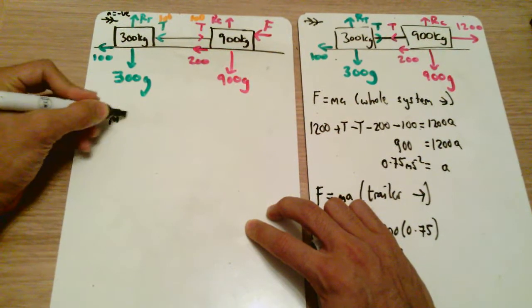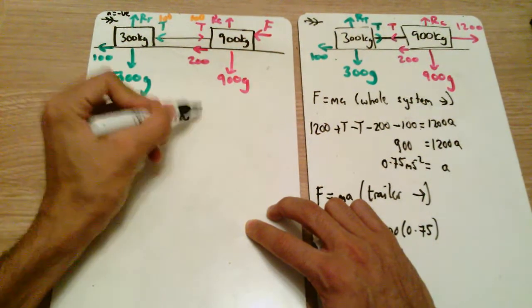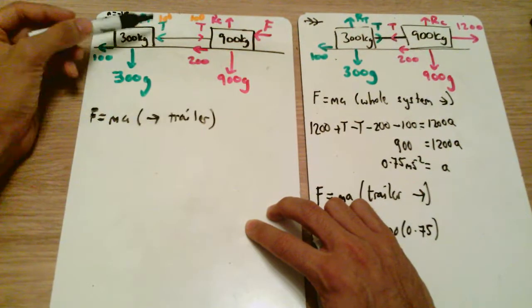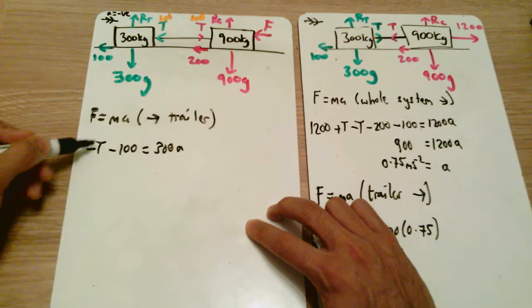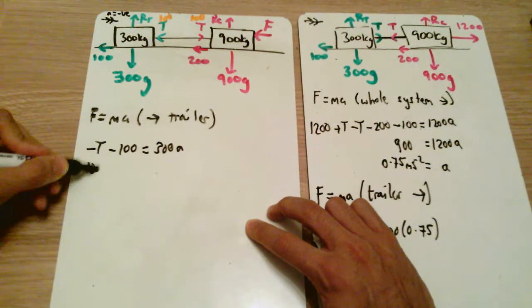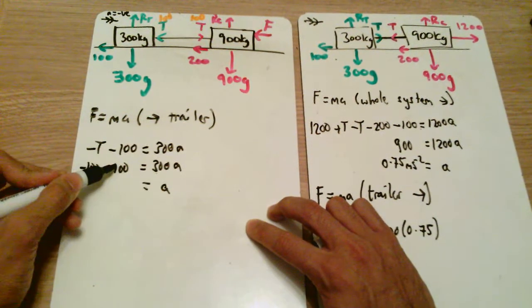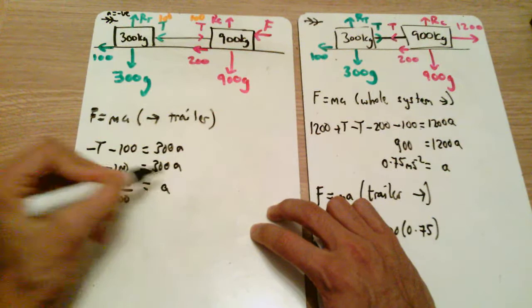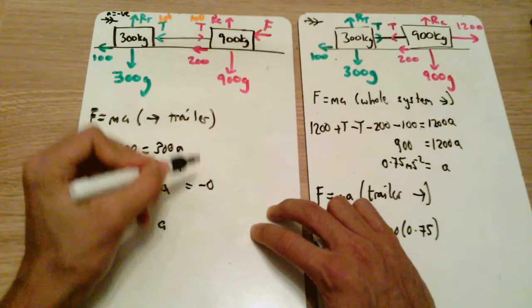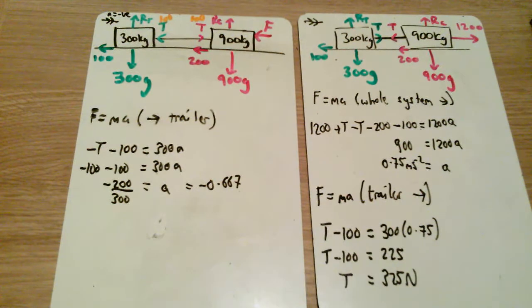So this is F equals ma on the trailer going to the right. The forces here are minus T minus 100 equals 300 times by a. T we know is 100 so minus 100 minus 100 equals 300a, therefore a is minus 200 divided by 300, which is equal to minus two thirds or minus 0.667, either of those are okay. So that enables us to work out the acceleration.